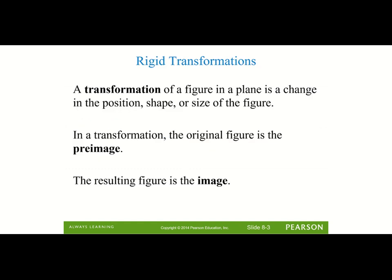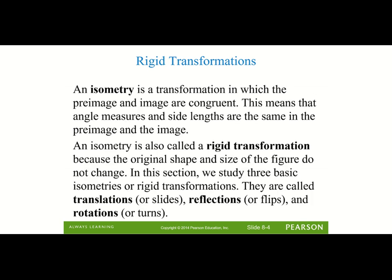Any type of transformation of a figure in a plane is a change in the position, the shape, or the size of the figure. In your transformation, the original figure is always the pre-image and the resulting figure is the image. The transformations we're going to look at are going to be isometries — a transformation where the pre-image and the image are congruent, so they're not going to change size. The angle measures and the side lengths will always remain the same for both the pre-image and the image.